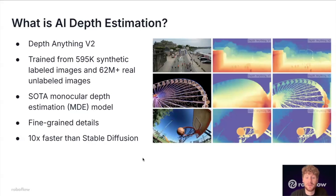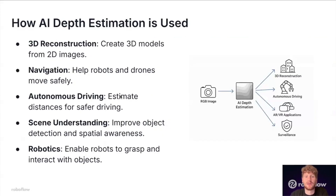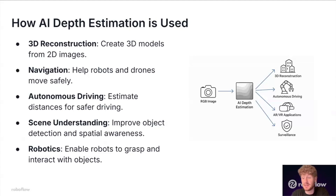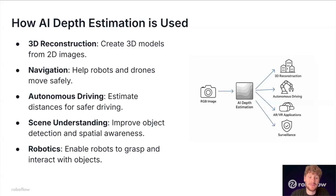It's also a fast model that can be used for real-time or near real-time applications with the right deployment. How is this model used in real-world applications? First, 3D reconstruction — taking two-dimensional images and showing them in 3D — which can be really important for architecture, archeology, virtual reality, augmented reality, and construction. For navigation and logistics use cases, robots need to know if they're going to run into a wall, person, or any type of object.